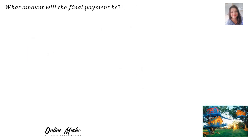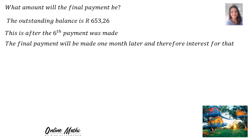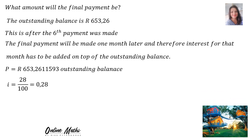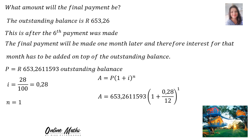The last question: what amount will the final payment be? The outstanding balance we calculated was 653 Rand — this is after the sixth payment was made. The final payment will be made one month later, so interest for that month has to be added on top of the outstanding balance. P is 653 Rand with all the decimals, I is 0.28, and N is 1 — only one month. Into the compound interest formula, substituting in P's place the 653 with all its decimals, bracket 1 plus 0.28 divided by 12, to the power 1. The final payment will be 668 Rand and 50 cents.